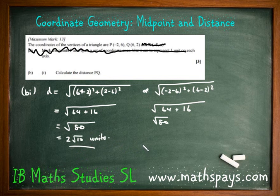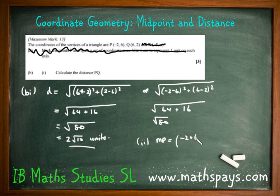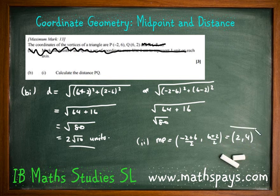The second straightforward question is finding the midpoint. For PQ, the midpoint is the average of the two x-coordinates: negative 2 plus 6 over 2, and 6 plus 2 over 2. That gives 4 divided by 2 is 2, and 8 divided by 2 is 4, so the midpoint is 2, 4 — right in between those two coordinates.